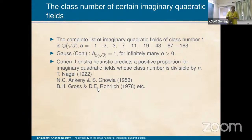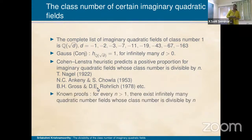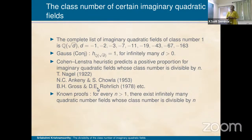The class number is divisible by n, and in this direction many people have worked — Nagell, Ankeny and Chowla, and Gross and Rohrlich. In this direction, what is known is that for any n strictly greater than one, there exist infinitely many quadratic number fields whose class number is divisible by n.